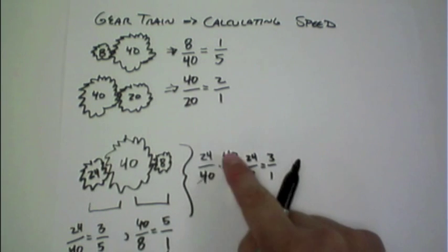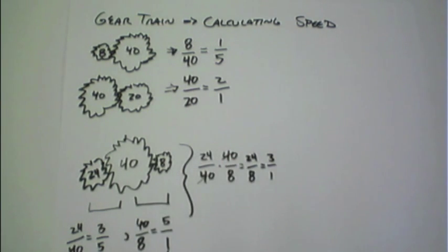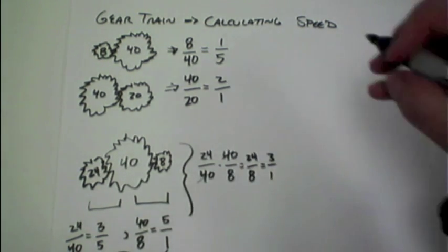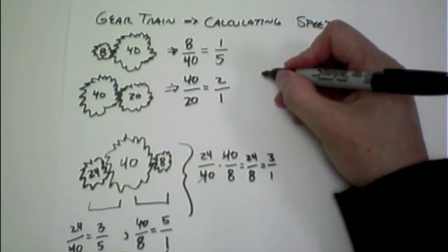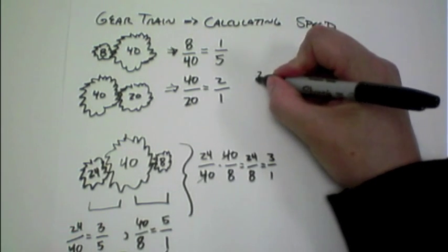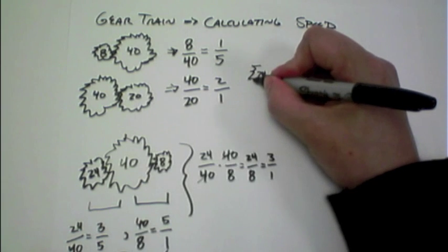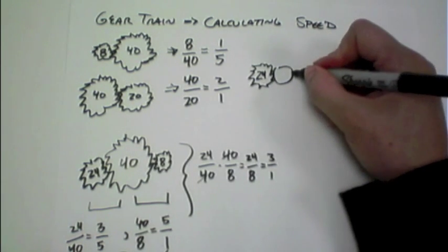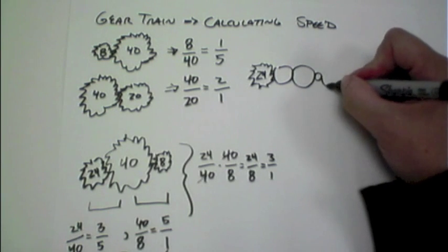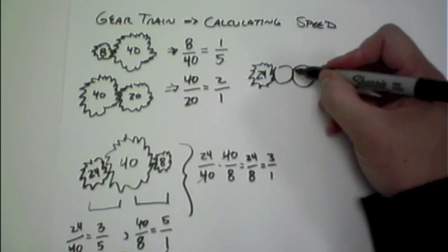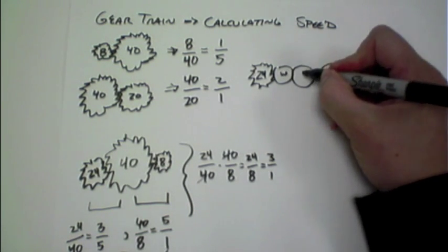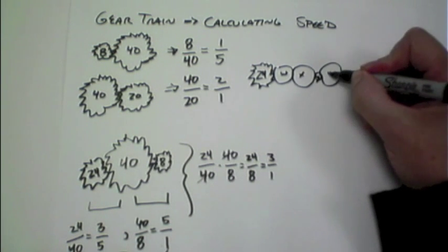What this indicates, though, is that that middle gear actually doesn't matter. So if we had a large gear train, so if we had our 24 here at the beginning, no matter what other gears, what other sizes we put in the middle, and I'll just give them variable names here to represent that.